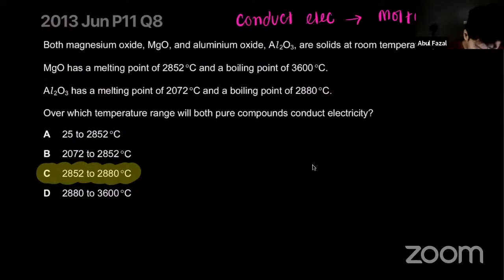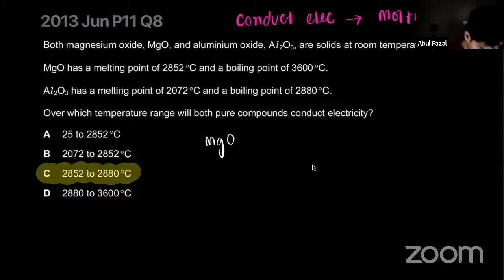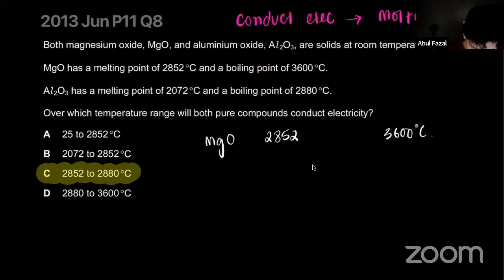For MgO, it has a melting point of 2852°C and then it turns into a gas at around 3600°C. That's the range where it will conduct.